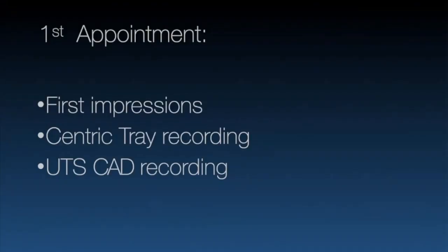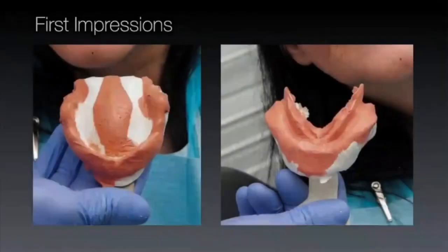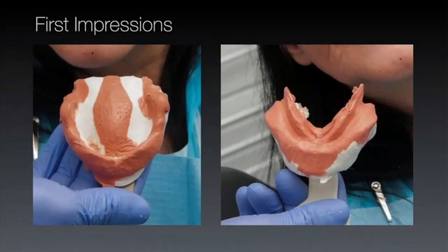At the first appointment, similar to BPS, we take our first impressions, center tray recording, and UTS card recording. Our patient here has dentures with a cant on them — the center line isn't too far off but the aesthetics aren't great. We take nice photographs and use an impression syringe for a two-stage alginate impression.